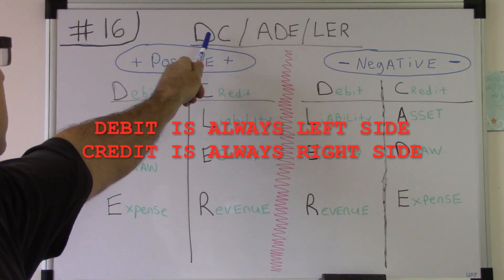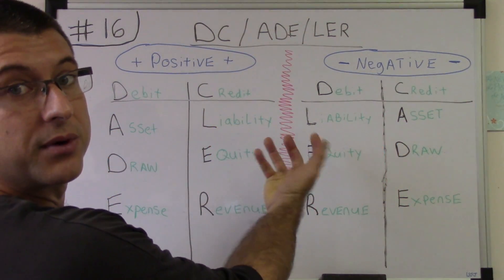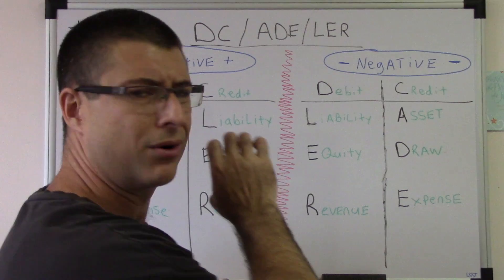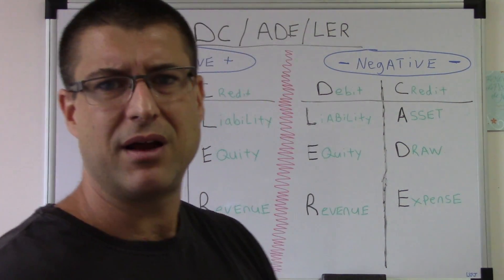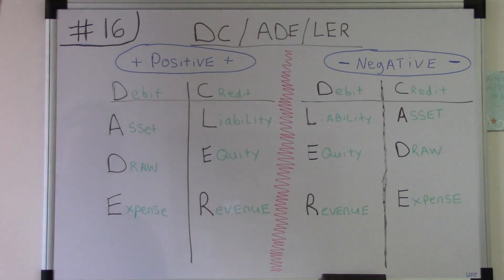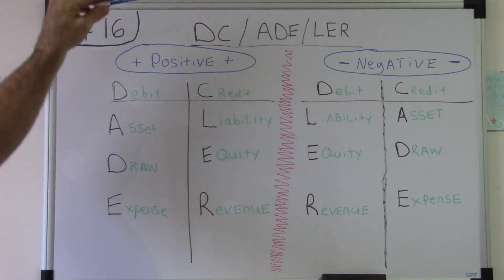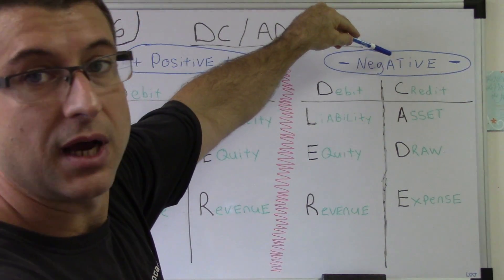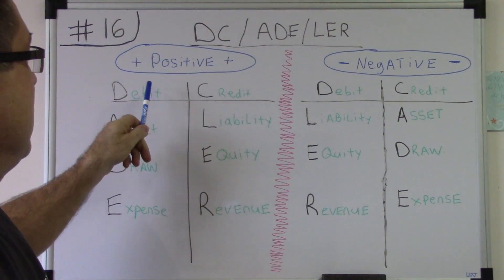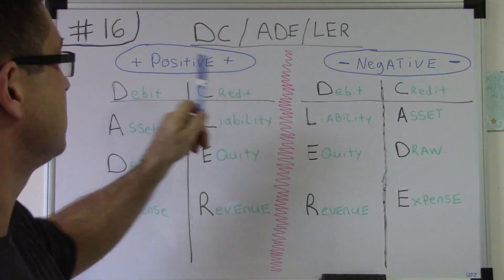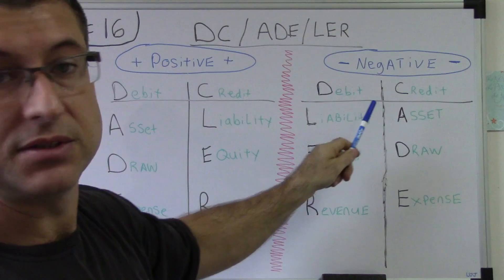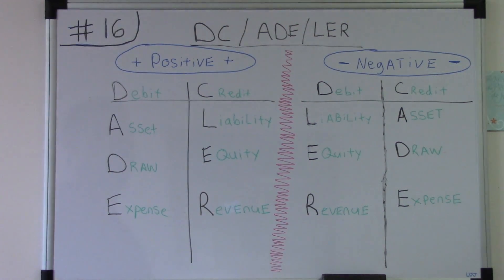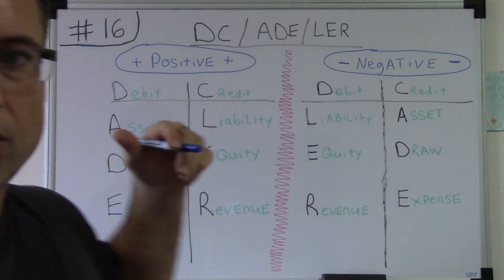The reason I like DC by itself is because this never switches — it's always positive. So even in the mirror when it flips, you've still got debit on the left, credit on the right. Always, whether it's the positive side or the negative side, debits are on the left and credits are on the right — always. And your journal entry is always going to balance.